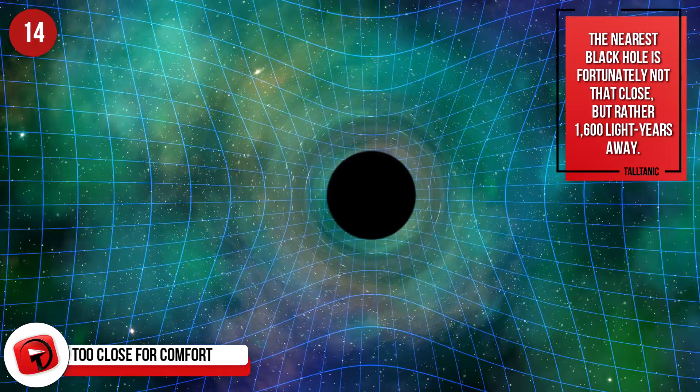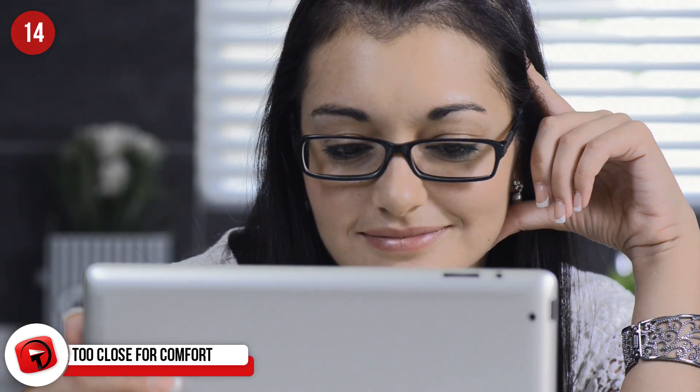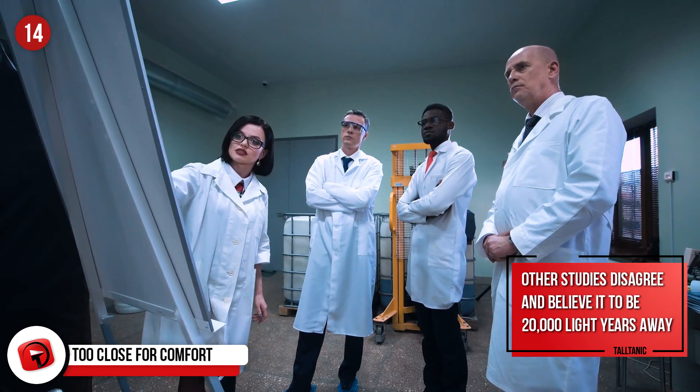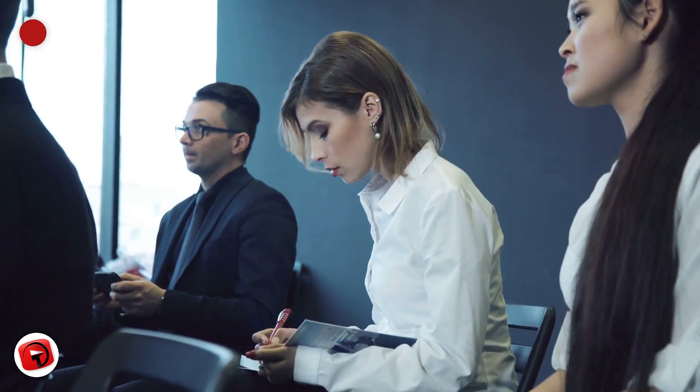Too Close For Comfort. The nearest black hole is fortunately not that close, but rather 1,600 light years away. You might think that's a bit too close, but it's not considered dangerous at all. Other studies disagree and believe it to be 20,000 light years away. We're going to side with other studies.